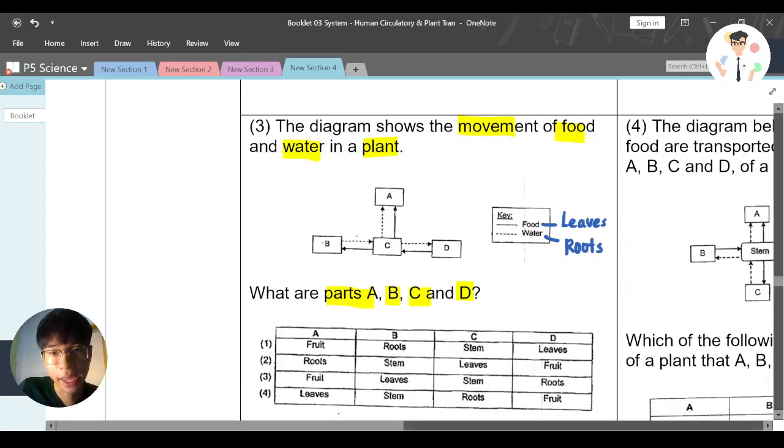Let's see. A, receiving both water and food. So for sure it's not leaf, it's not roots. Let's look at B.